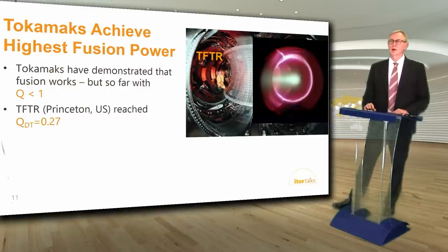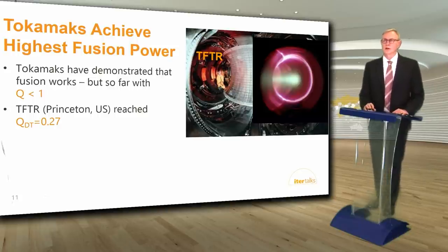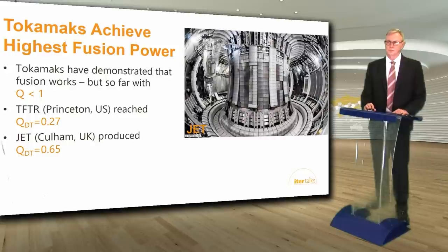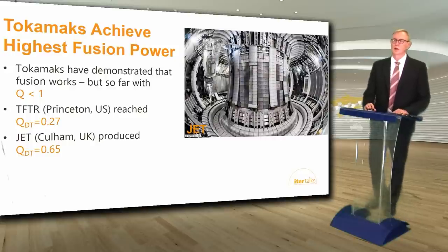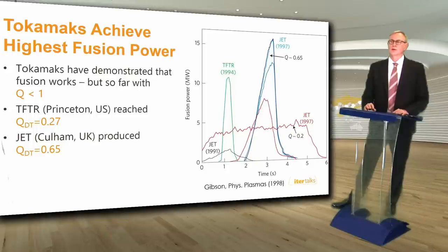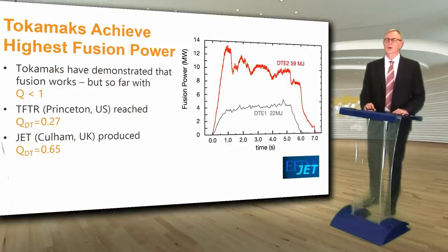Tokamaks have achieved the highest fusion power of any controlled fusion device and have demonstrated that fusion works, but so far with Q less than 1. The TFTR tokamak in Princeton, New Jersey achieved a Q-DT of 0.27 using lithium conditioning to increase fusion performance. The JET tokamak in Culham, UK produced the highest controlled Q-DT value to date of up to 0.65. JET has also recently achieved a record DT fusion energy of 59 megajoules, with about 10 megawatts of fusion power for more than 5 seconds.